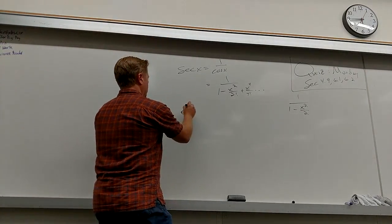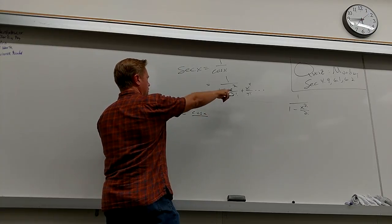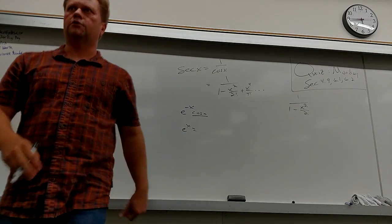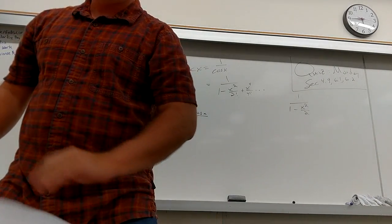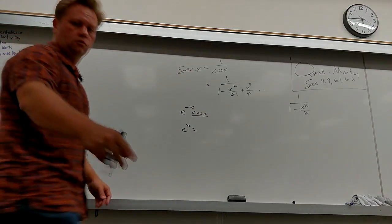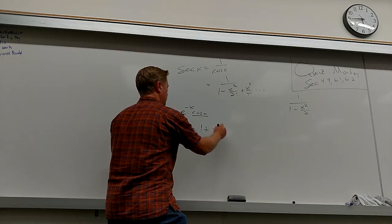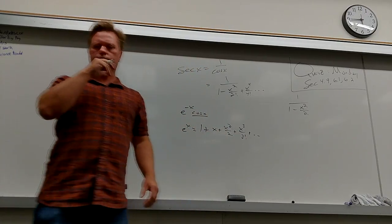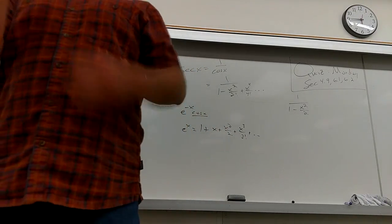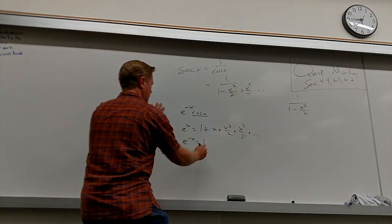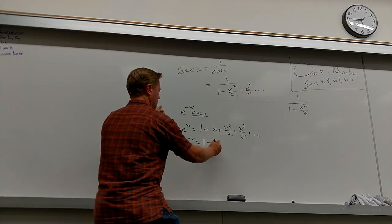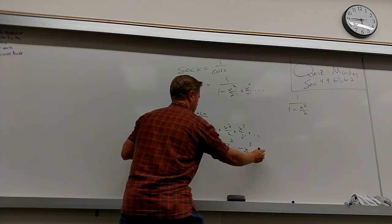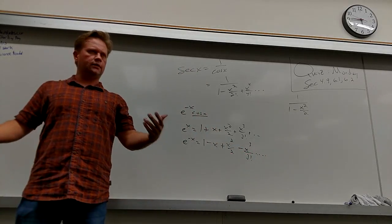So I'm dealing with this guy — cosine x I know. What would e to the negative x be? The Taylor series for e to the x is 1 plus x plus x squared over 2 plus x cubed over 3 factorial. So for e to the negative x, just all the odd powers become negative and all the even powers eat that negative up.